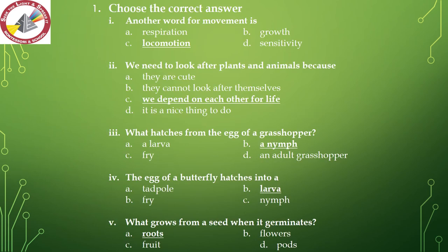Question number 1 is: choose the correct answer. Number 1 — another word for movement is: respiration, growth, locomotion, or sensitivity. The correct answer is locomotion.